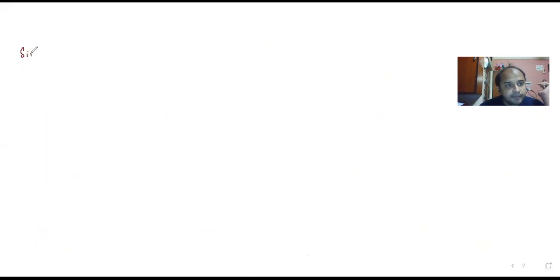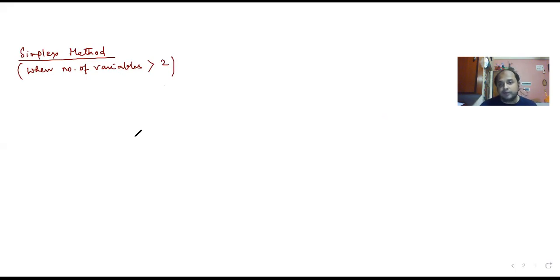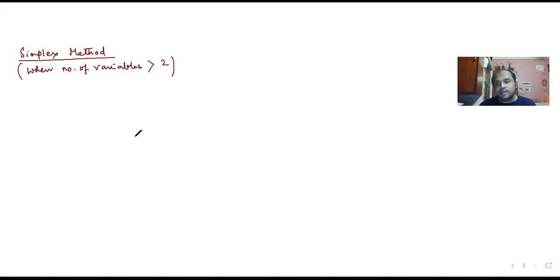Simplex method is basically used when the number of variables is greater than two, because if the number of variables is greater than two, it is not possible to draw a graph. A two-dimensional figure we can visualize well, and a three-dimensional figure is hard but possible with software. But if the number of variables is more than three or four, it is not possible even with software. So there is an algebraic method called the simplex method which can help us.